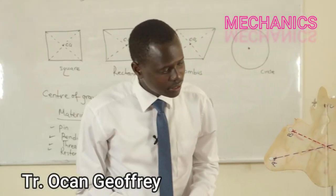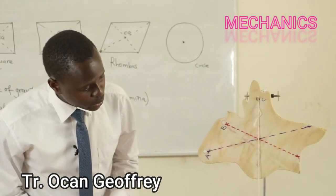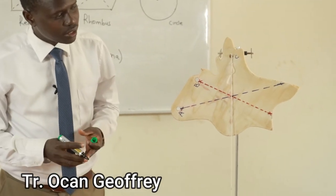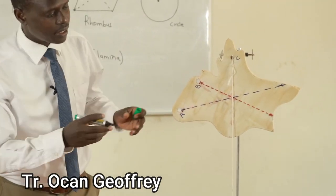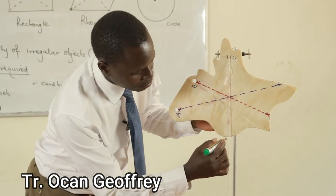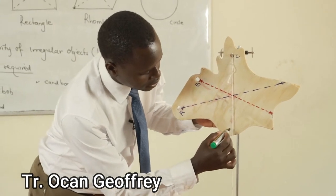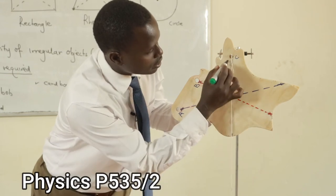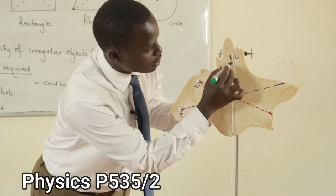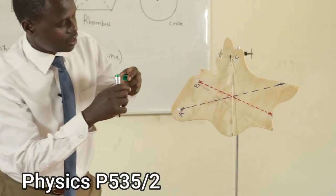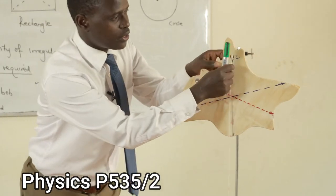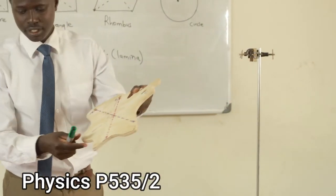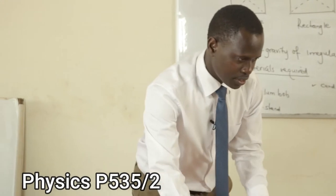I've stopped swinging. Now we are going to mark two points on this laminar for tracing — that's the red marker. After doing that, I come and join the two points.